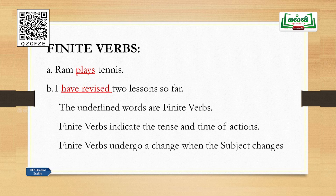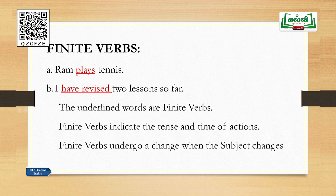What are finite verbs? Look at the first sentence: 'Ram plays tennis,' and sentence B: 'I have revised two lessons so far.' Look at the verbs — in sentence A, 'plays' is a finite verb in simple present tense; in sentence B, 'have revised' is in present perfect tense. The underlined words are finite verbs. Finite verbs indicate the tense and time of actions — that is rule number one. When you see a verb and you are able to find out the tense and time of action, it is a finite verb.